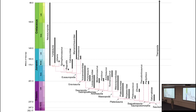This was different from the ornithischians, for whom we have maybe one specimen in the Triassic, and we'll see theropods are somewhat in between the two.